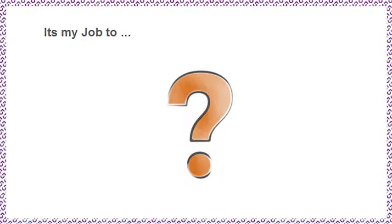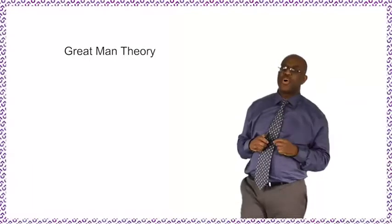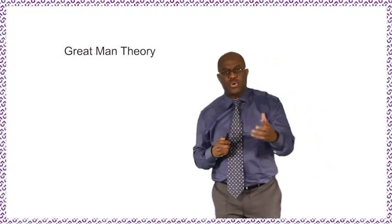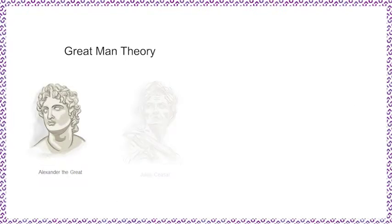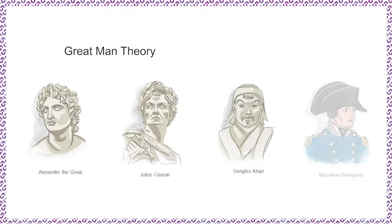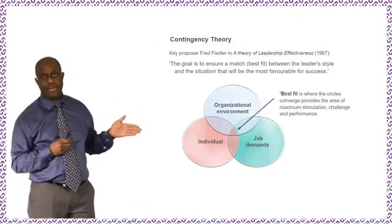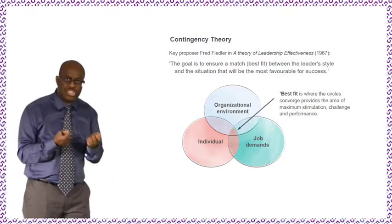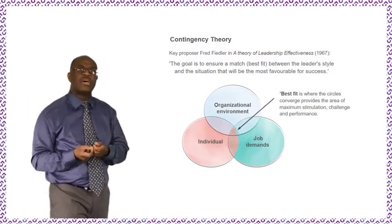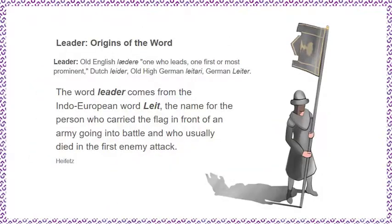Here we show what would be considered typical exemplars of the Great Man Theory: Alexander the Great, Julius Caesar, Genghis Khan, and Napoleon. To what extent do you think these three areas — when making decisions and taking actions — affect leadership?